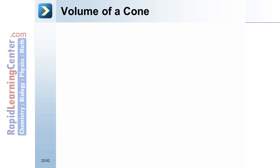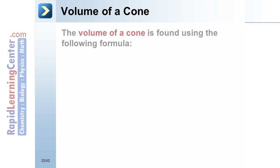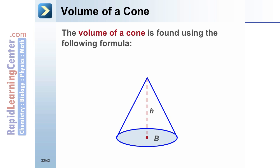The volume of a cone. The volume of a cone is found using the following formula: V equals one-third times B times H, where B is the area of the base and H is the height of the cone.